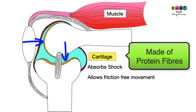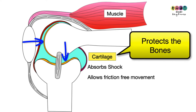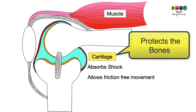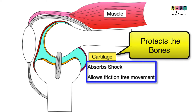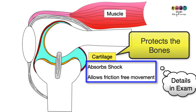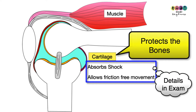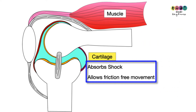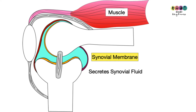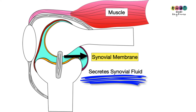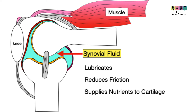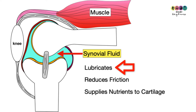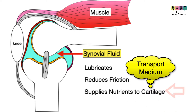Covering the ends of the bones is cartilage. Cartilage is made of protein fibers and is very flexible, so it's there for protection because it absorbs shock and stops the bones hitting off each other and chipping, allowing friction-free movement. If you're asked about the role of cartilage, it's not enough simply to state protection — you must elaborate. Lining the joint is the synovial membrane, which secretes synovial fluid. Synovial fluid lubricates the joint, reduces friction, and also supplies nutrients to the cartilage.